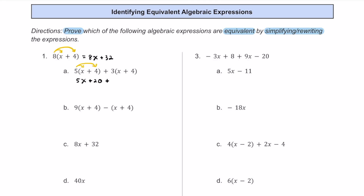We have a plus sign, so let's keep going. We distribute this 3 to the x and then 3 to this 4. So 3 times x is 3x, and 3 times 4 is 12. If we combine like terms, this 5x and 3x combine to make 8x, and then positive 20 and positive 12 combine to make positive 32. So this expression of 8x plus 32 equals the original 8x plus 32. Answer choice A is equivalent — yes.